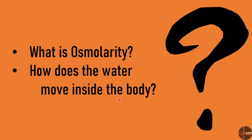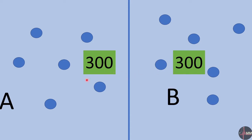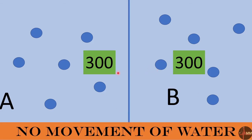What is osmolarity and how does water move inside the body? Osmolarity means the concentration of a solute. Say I put six dots in compartment A and six dots in compartment B — both have equal osmolarity, say 300. They are separated by a membrane permeable only to water and not to the solute. If osmolarity of A and B are equal, there is no movement of water.